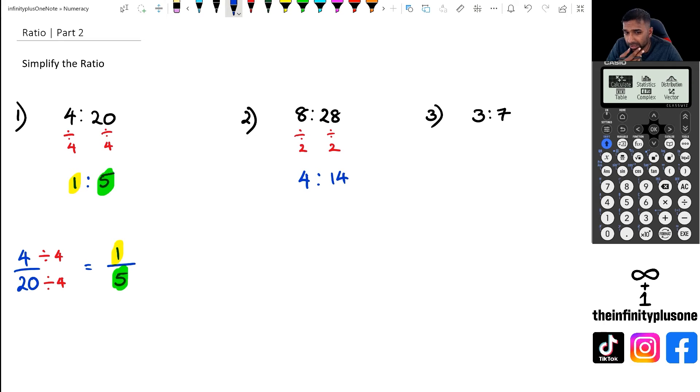Now once again I can probably simplify this further because both of these numbers are even numbers, so I could actually divide by 2 again. And this time 4 divided by 2 is 2, and 14 divided by 2 is 7. So 8 to 28 could be simplified as 2 is to 7.